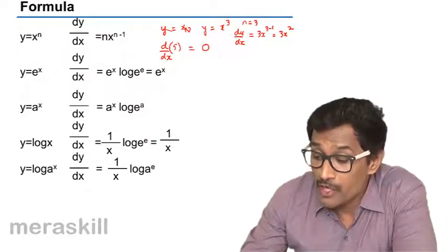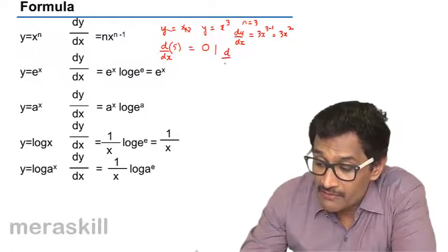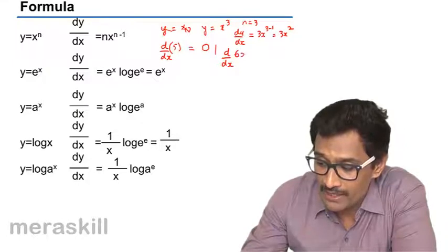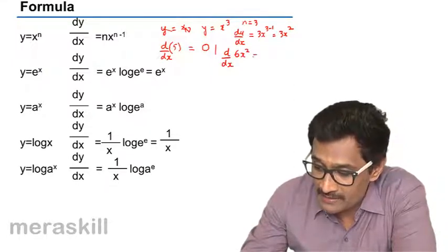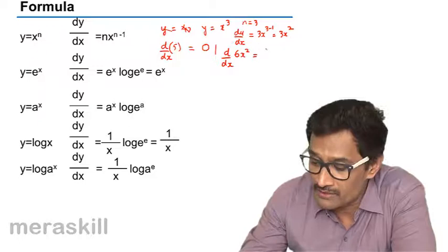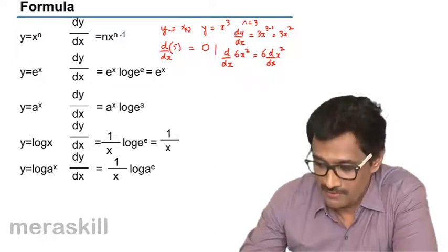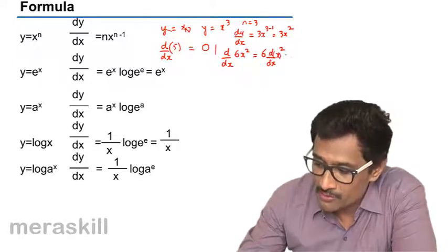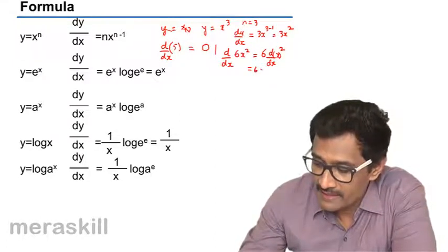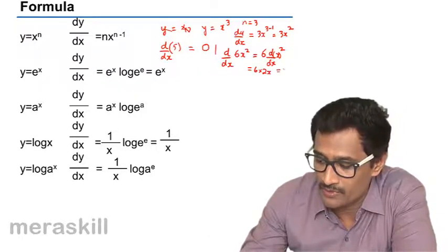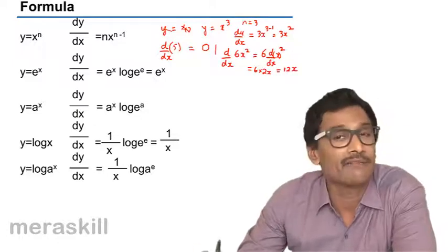Now suppose you want to find a combination of derivative of a constant multiplied by a variable. In that case, the constant can be taken out. You can write it as 6 times d/dx of x². So this will turn out to be 6 into, using the same formula n times x, that is 2x raised to 2 minus 1. So this will turn out to be 12x.